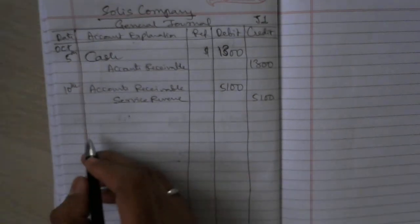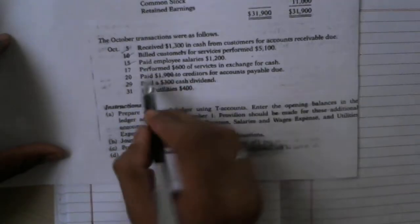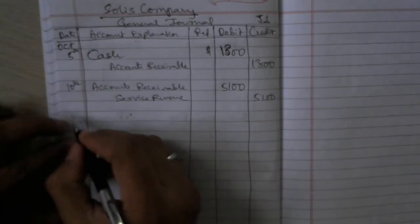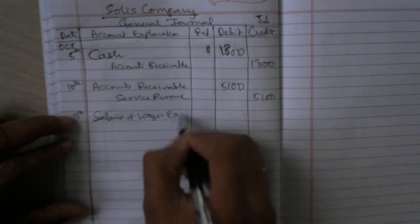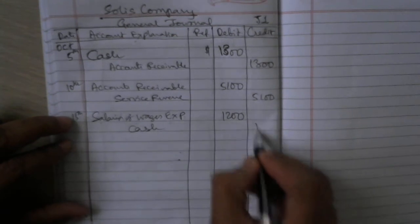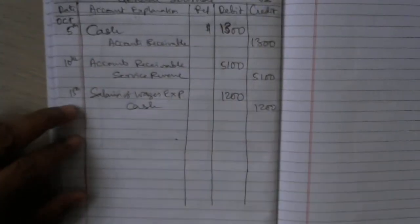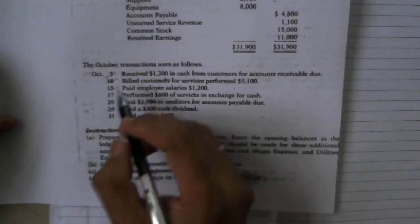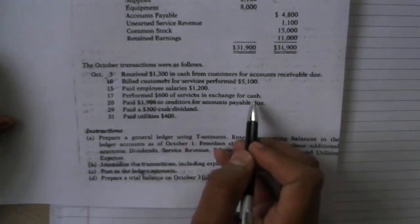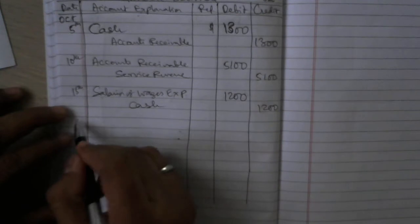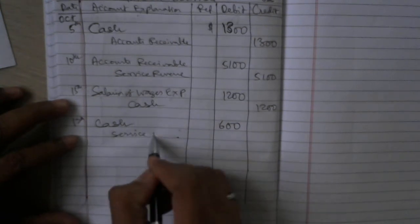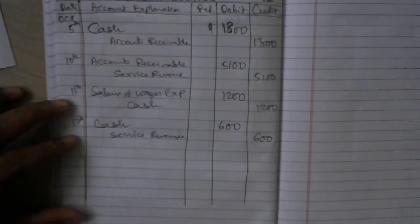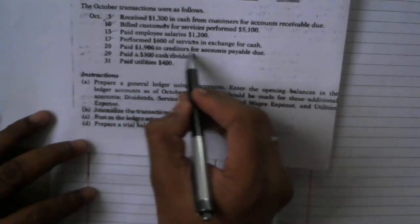October 15th — paid employee salaries of $1,200. Salaries and wages expense is debited by $1,200, and cash is credited by $1,200 — expense increases, cash decreases. October 17th — performed $600 of service in exchange for cash. Cash is debited by $600, and service revenue is credited by $600.